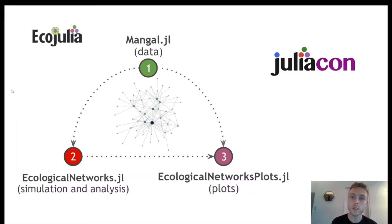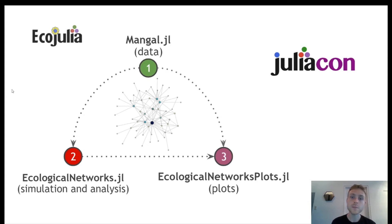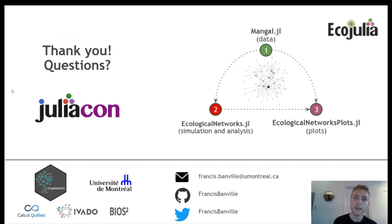To conclude, the packages I presented today provide a useful methodological framework for the study of ecological networks in Julia. Mangal is used to query data, Ecological Networks is used to simulate and analyze networks, and Ecological Networks Plots is used to visualize these networks. This is part of our broader project, Eco-Julia, for the analysis of ecological data in Julia. It will be my pleasure to answer your questions in the chat, and you can also reach me by email or Twitter. Thank you very much!